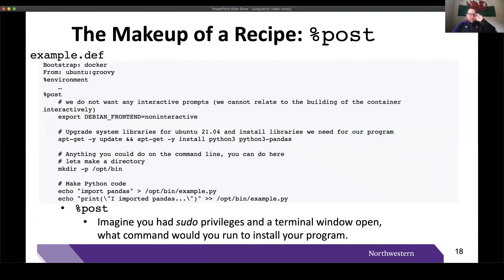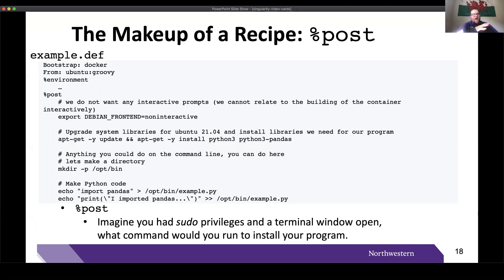The most important section of the Singularity definition or recipe file is the Post section. Post means post-bootstrap — after you take the base layer container, what are the things you want to build on top of it? Think of it this way: imagine you logged in to a brand new computer as the root or admin user and wanted to install the software you wanted to use. All of the commands, in order, that you would type in that situation — you want to verbatim copy-paste all of those lines of code into the Post section.